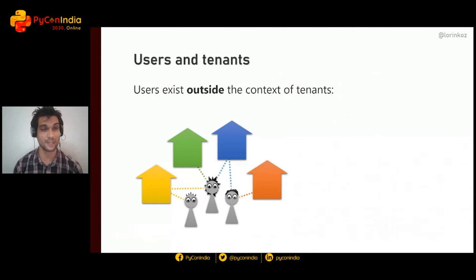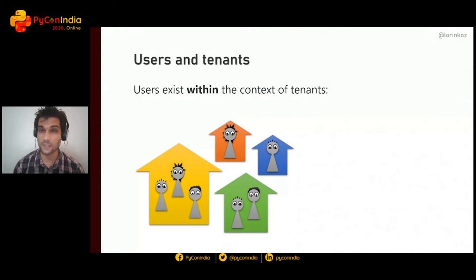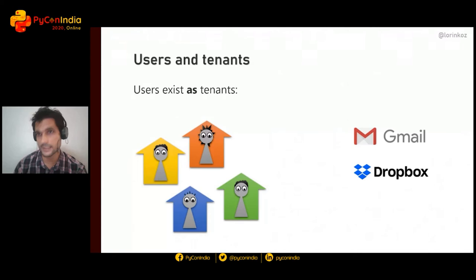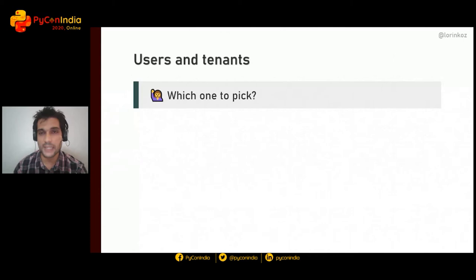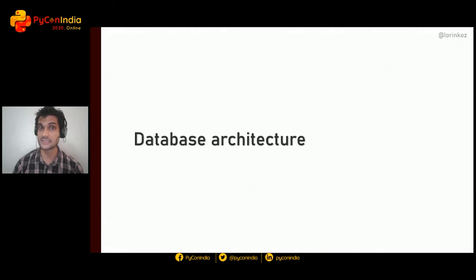Shape one: users exist outside the context of tenants — a loose, non-strict relationship, as in WordPress, Shopify, and Discord. Shape two: users exist within the context of tenants — you cannot imagine a user outside a tenant, like Slack, where you can't log in without specifying a workspace first. Shape three: users and tenants are the same thing, as in Gmail and Dropbox.